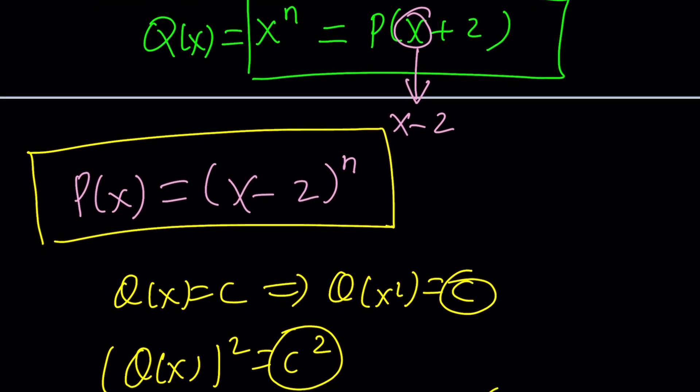Besides that, these are all the solutions where n is a natural number. And, for example, (x - 2), (x - 2)², third, fourth, millionth power, they're all solutions. And this brings us to the end of this video.